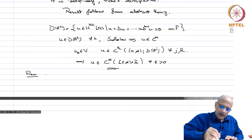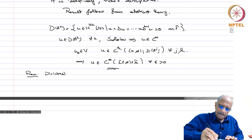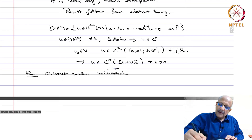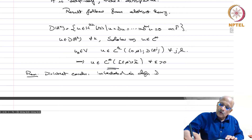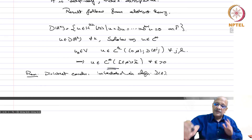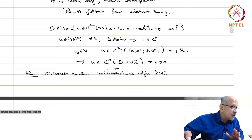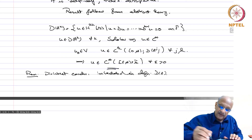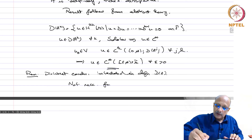Remark: the Dirichlet condition is embedded in the definition of D(A). This essential boundary condition must be imposed, and in the definition of D(A) itself we have built it in. If it were a Neumann condition, this would not have been necessary — the Neumann condition is not necessary to encode in D(A) in the same way.